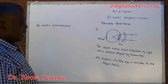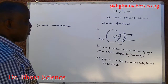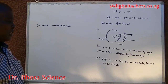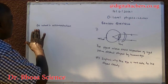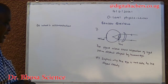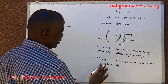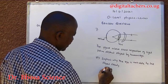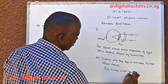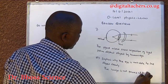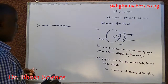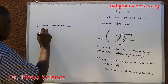Number seven: the figure shows refraction of light from a distant object by the human eye. A — Explain why the eye is not able to see the object clearly. The image is formed in front of the retina. B — What is accommodation? Accommodation is the ability of the eye to focus images of objects at variable distances from the eye onto the retina.